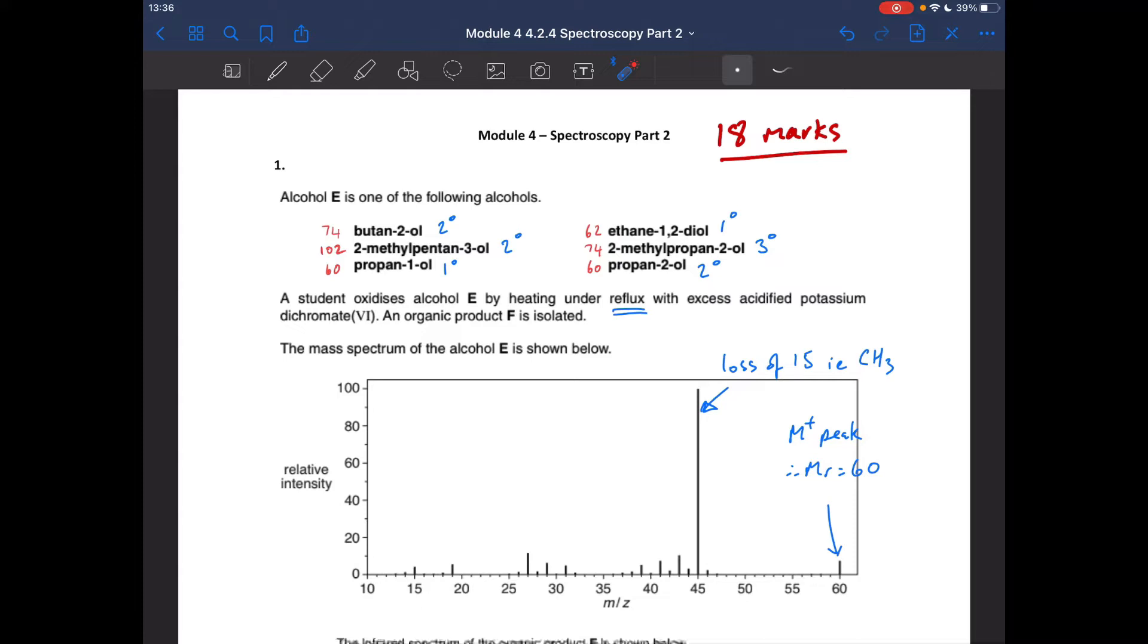So we've got six alcohols to choose from. The first thing I've done is worked out their MRs, you'll obviously appreciate why that's relevant. You can see these numbers in red are the MRs of these alcohols. The other thing you can do is establish what kind of alcohols they are, and again, that's very important.